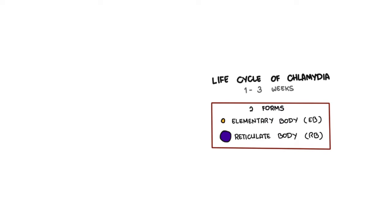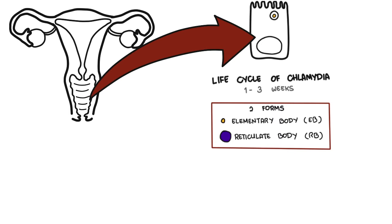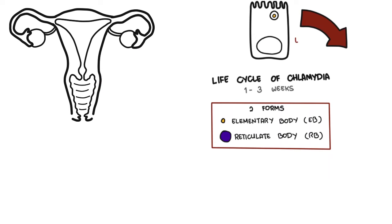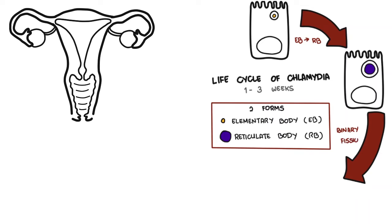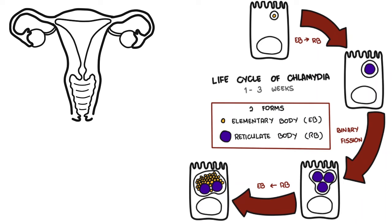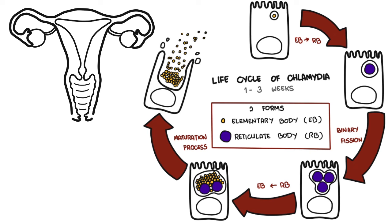The elementary bodies invade the epithelial cells of the urogenital tract, changing into reticulate bodies once inside. The reticulate bodies replicate and mature back into the elementary bodies, aggregating together in groups called large inclusion bodies. Once maturation is complete in two to three days, the infected cell ruptures and frees the bacteria to continue the replication process by invading other surrounding cells.